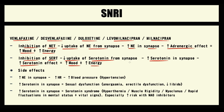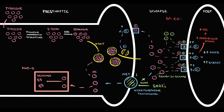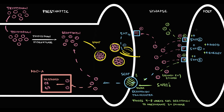Serotonin-norepinephrine reuptake inhibitors are considered relatively safe antidepressants, but they do have side effects. Because SNRIs cause an increasing amount of norepinephrine in the synapse, they increase adrenergic stimulation, which typically causes an increase in heart rate. Blood pressure equals cardiac output times systemic vascular resistance, and cardiac output equals stroke volume times heart rate. With increasing heart rate, cardiac output increases, and thereby blood pressure increases — so hypertension develops.